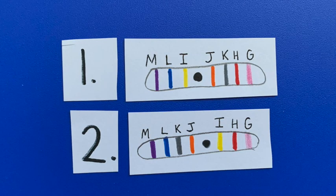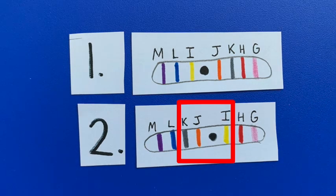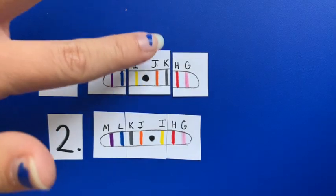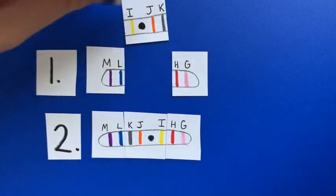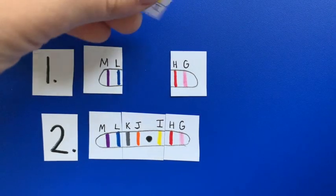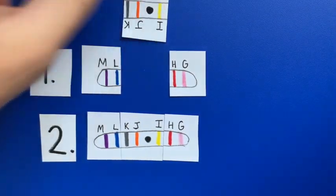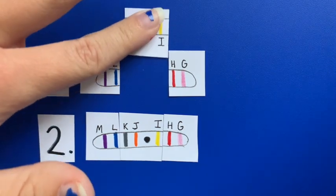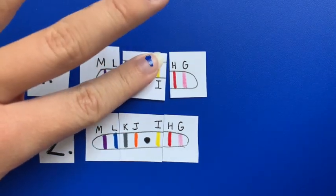For example, here we have an individual with these two chromosomes. Where is our inversion? We can see that chromosome 2 has undergone a pericentric inversion when compared with chromosome 1. We know this because the chromosome was broken at two separate points on both sides of the centromere. The portion is rotated 180 degrees and reinserted.